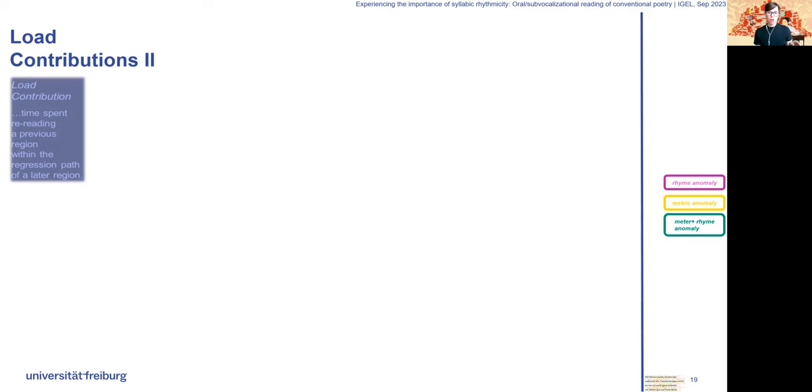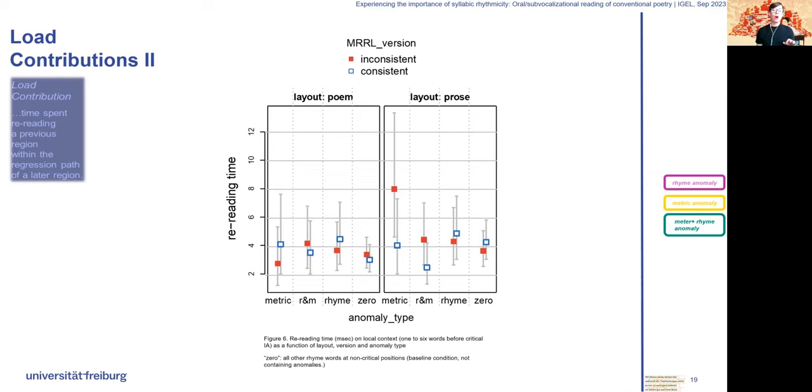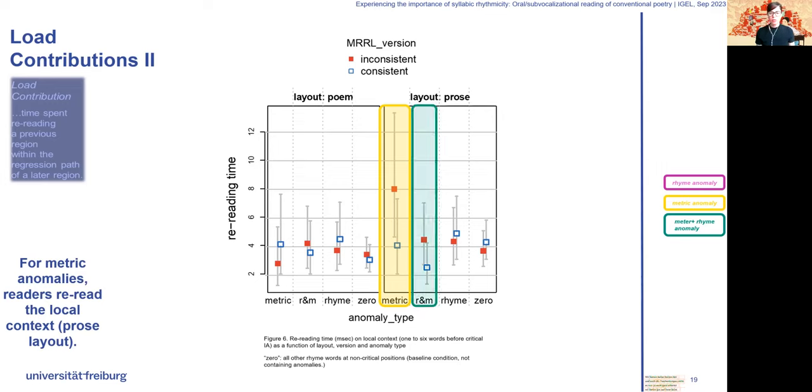Load contribution on six words before the critical interest area revealed that only in prose layout, the metrical and, less so, the combined anomaly caused selective re-reading of the local context.